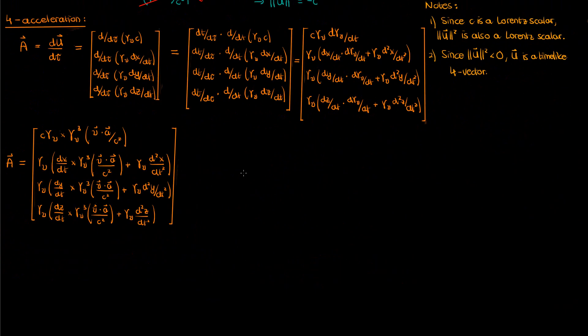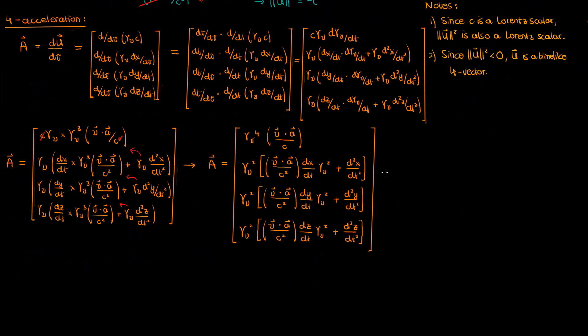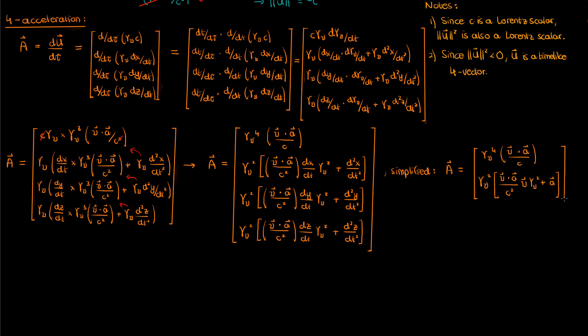Let's now plug this into the expression for the acceleration four vector. We cancel the c's in the first component and take an additional gamma common from the last three components to get the final acceleration four vector. We can simplify it further using the three vector velocity and three vector acceleration in the spatial components.